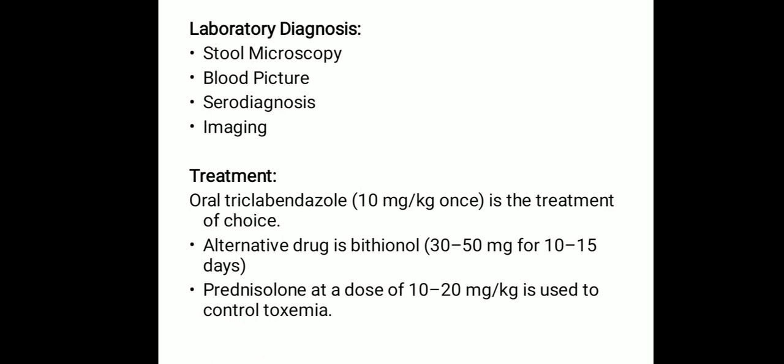In chronic fascioliasis, Fasciola coproantigen may be detected in stool samples. For imaging, one can use ultrasound (USG), CT scan, endoscopic retrograde cholangiopancreatography (ERCP), and percutaneous cholangiography, which may be helpful in diagnosis.